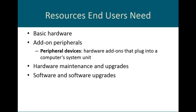Looking at the basic resources end-users need to be productive, this could include hardware, peripheral devices, hardware upgrades and maintenance, operating systems and application software, software upgrades, supplies, data and information, facilities, and technical support. Take that in mind as you are looking at either upgrading a system or introducing a system — all that information needs to be kept in mind.